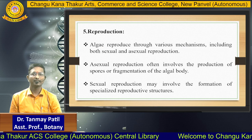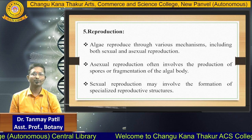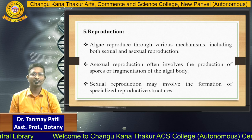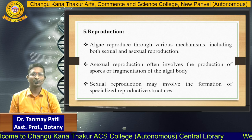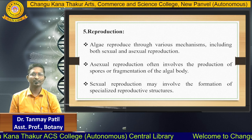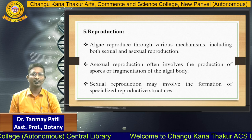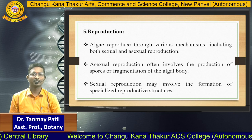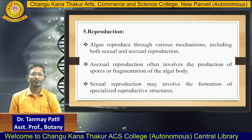The next characteristic is algae reproduction. Algae reproduce through various mechanisms including both sexual and asexual reproduction. Asexual reproduction often involves the production of spores or fragmentation of the algal body. Sexual reproduction may involve the formation of specialized reproductive structures.